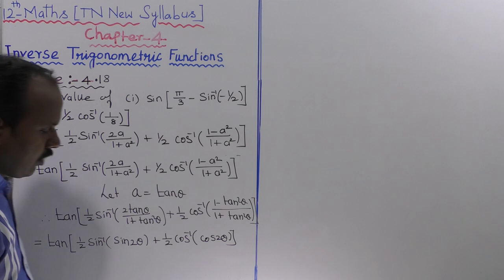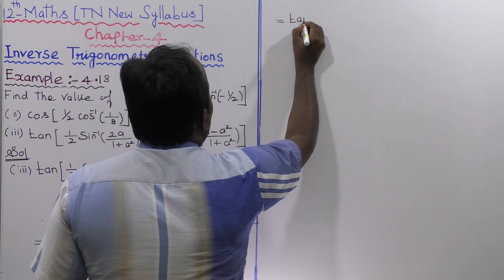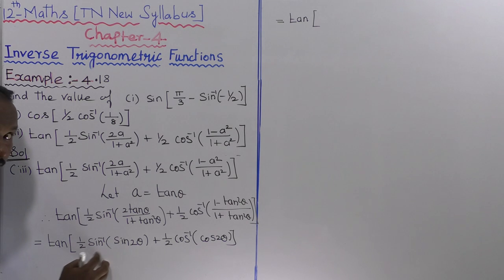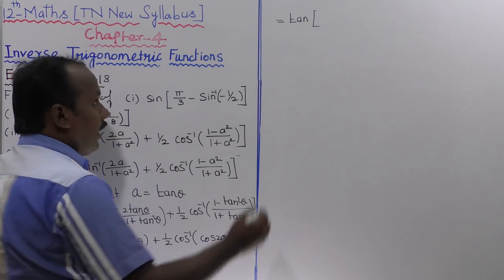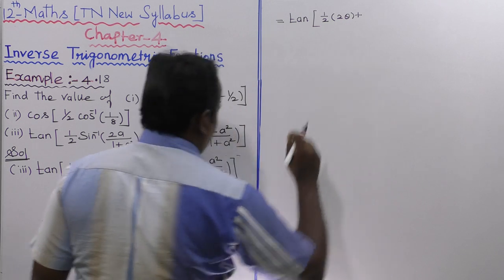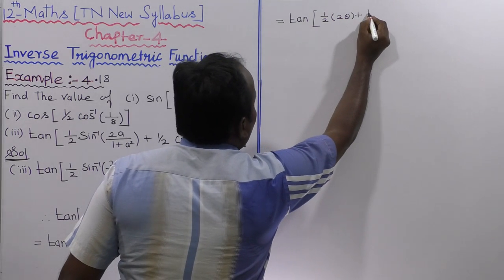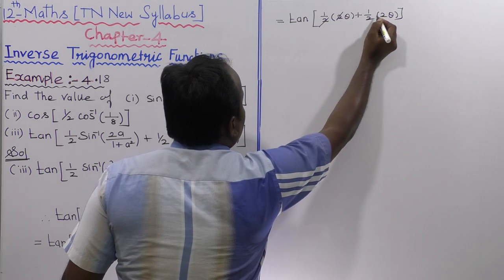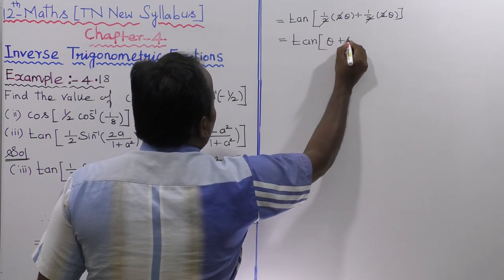Now that is equal to tan of: sin inverse of sin 2 theta is equal to 2 theta, so 1 by 2 into 2 theta. Next plus cos inverse of cos 2 theta is equal to 2 theta, so 1 by 2 into 2 theta. The 2s cancel, giving tan half into theta plus theta.